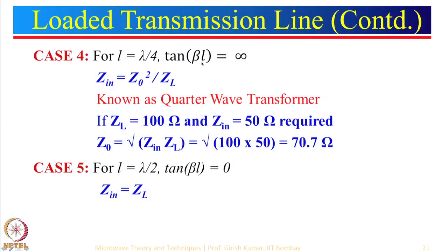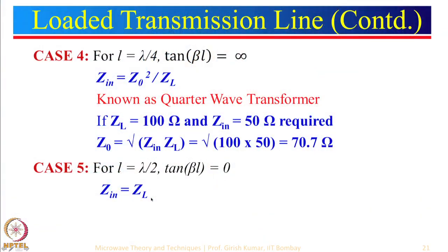Case 5: half-wave line, length = λ/2. When L = λ/2, tan(βL) = tan(180°) = 0, so Z_in = Z_L. The input impedance equals the load impedance regardless of the characteristic impedance of the line. This is useful for layout purposes — for example, in a series-fed microstrip antenna array where a length of λ/2 provides a 180-degree phase shift while keeping the input impedance equal to the load impedance.